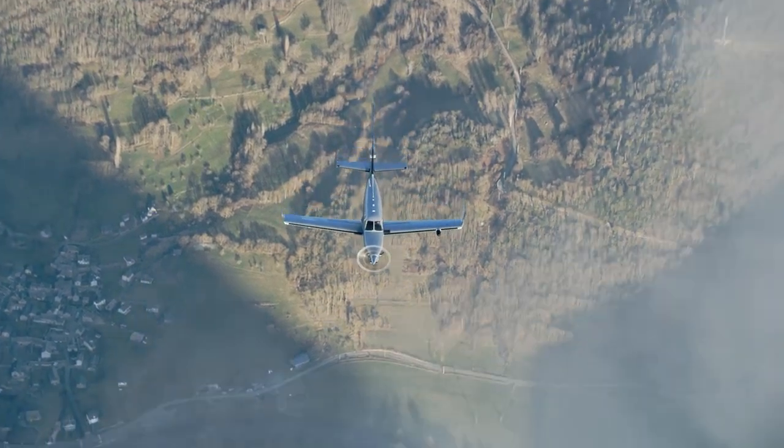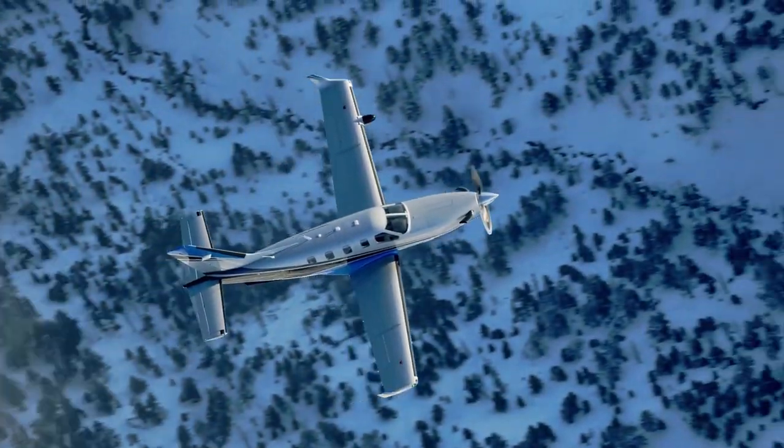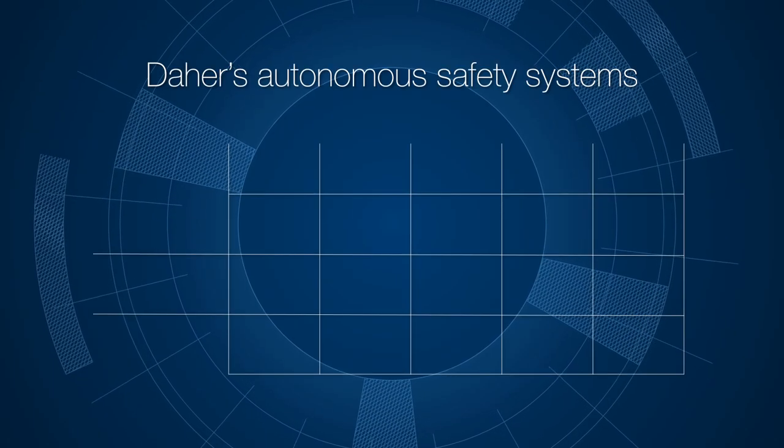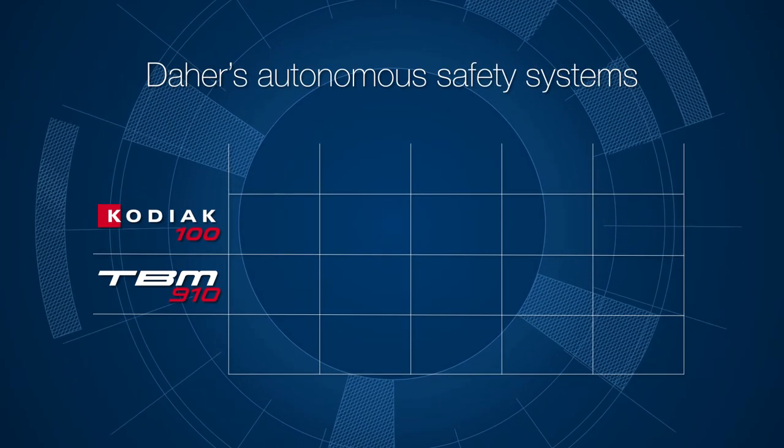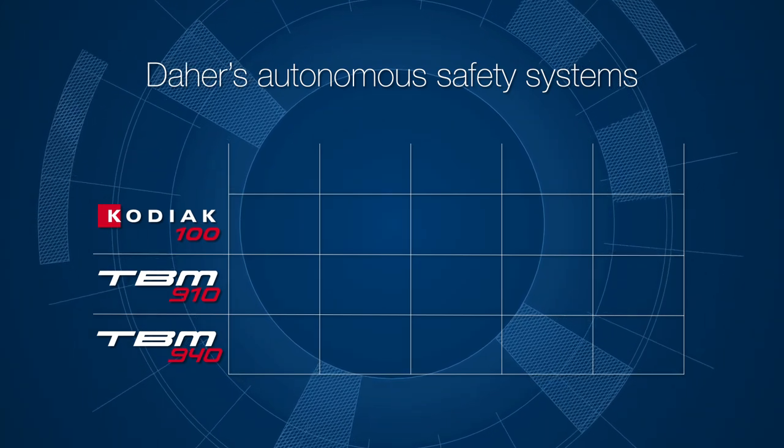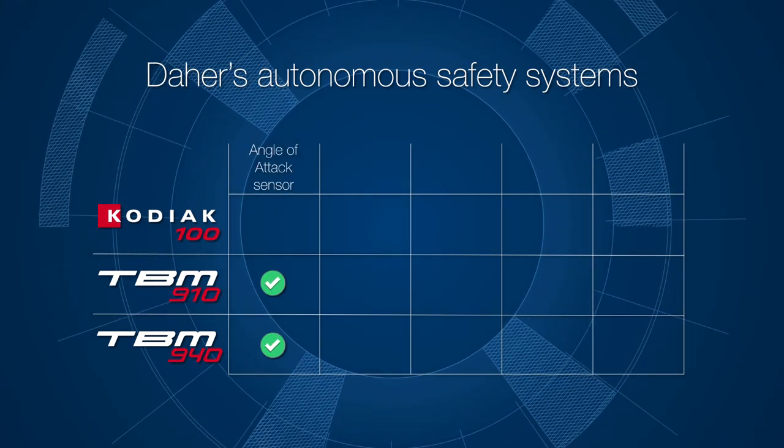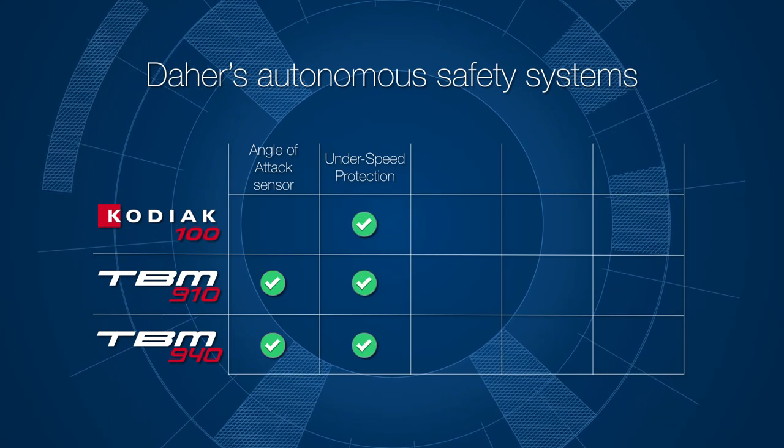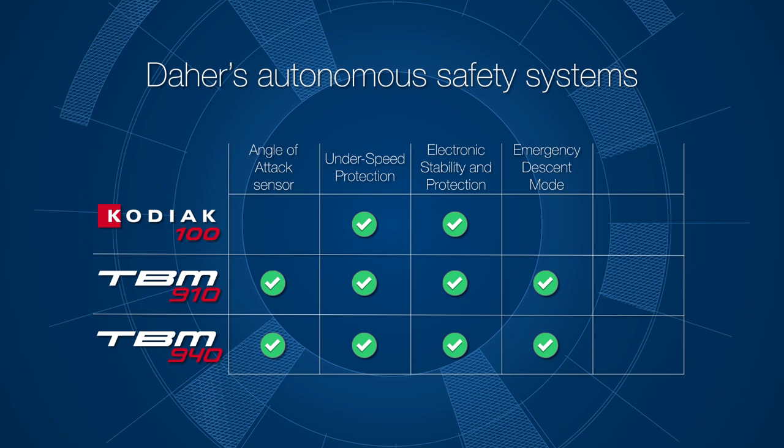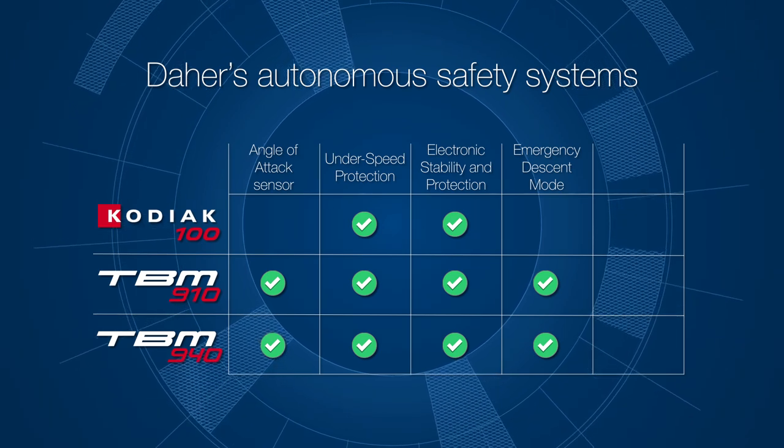Safety has always been Dyer's top priority. This was the motivation for Dyer's outfitting of its Kodiak 100, TBM 910, and TBM 940 aircraft with autonomous safety systems such as angle of attack, under speed protection, electronic stability and protection, emergency descent mode, and more recently, auto throttle.